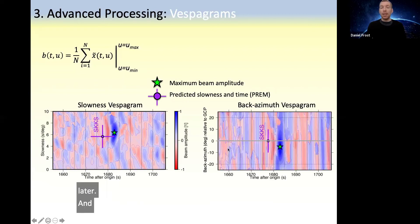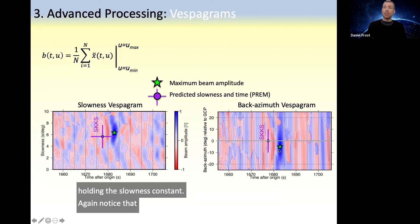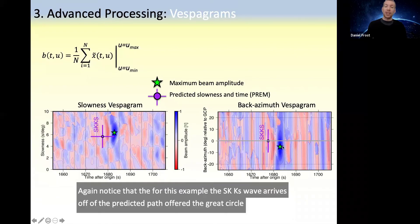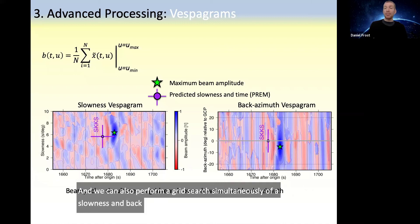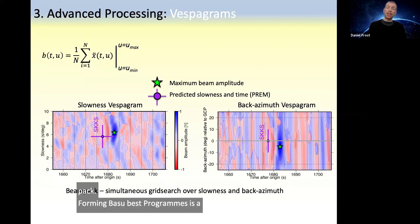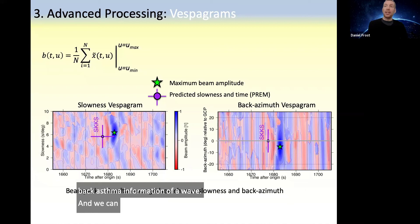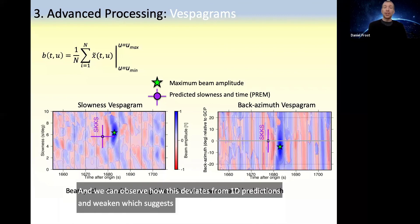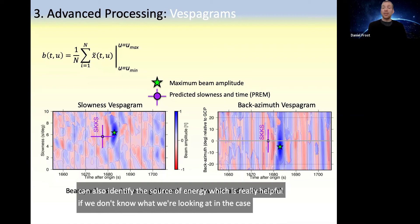We can also form back azimuth Vespagrams holding the slowness constant. Again, the SKKS wave arrives off the great circle path, suggesting some velocity heterogeneity. We can also perform a grid search simultaneously over slowness and back azimuth, which we refer to as a beam pack. Forming Vespagrams is a really important tool since we can measure the true slowness and back azimuth information of a wave, observe how this deviates from 1D predictions suggesting 3D structure, and also identify the source of energy — which is really helpful for scattered waves or reflections.